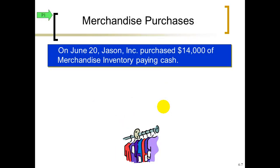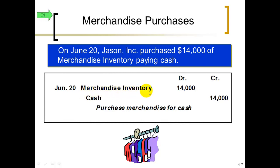Let's talk about a transaction that has to be journalized — debits and credits. On June 20th, our company Jason purchased $14,000 of merchandise inventory and paid cash right away. It's very unlikely for a medium or large company to pay cash right away; usually we buy on account. We're buying an asset called merchandise inventory, and assets increasing follow the rule of debits. Cash is another asset; when you see the word 'pay,' you know automatically cash credit — reducing that asset.